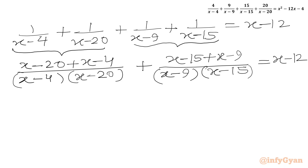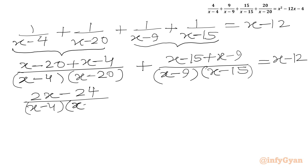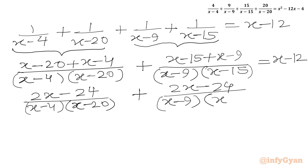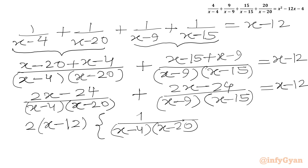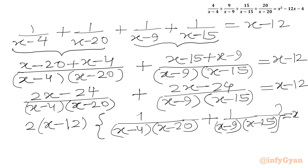Now X plus X is 2X, and the constants give minus 24. In the denominator we write (X−4)(X−20) and (X−9)(X−15). RHS is X minus 12. We can take 2 common and write 2 times (X−12), then: 1/[(X−4)(X−20)] + 1/[(X−9)(X−15)], and in RHS we write X minus 12.